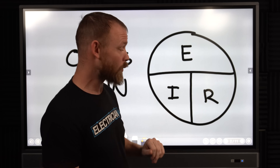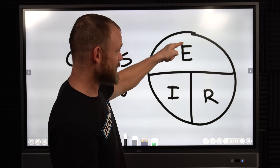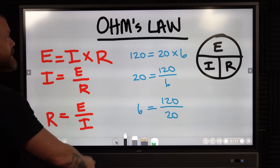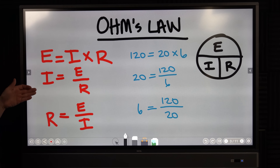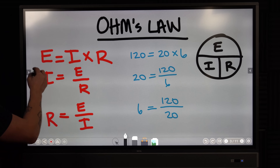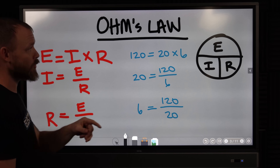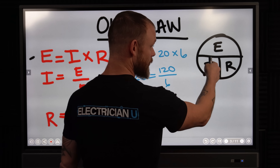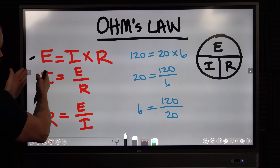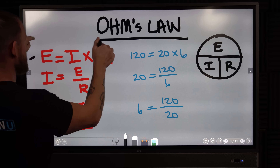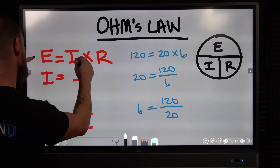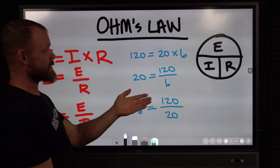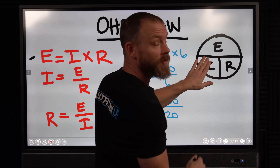If you want to solve for one of these, just cover the one you're trying to solve for and it tells you what equation to use. With Ohm's Law there are three different ways you can structure it. The first one is E equals I times R — if you're solving for voltage, E equals I times R. If you're solving for amperage, cover I and it's E over R.